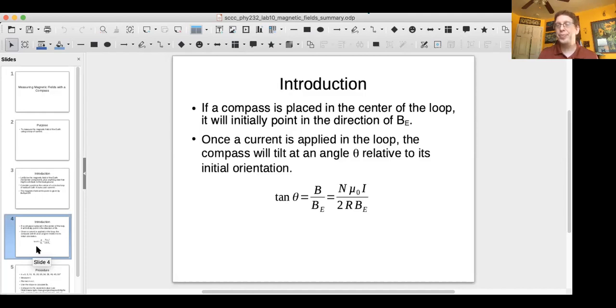When you apply a current, the component of the magnetic field in a perpendicular direction to the Earth's magnetic field is going to increase. The tilt is going to increase from theta. It's going to start at 0 when there's no current, and it's going to increase as you add the current.